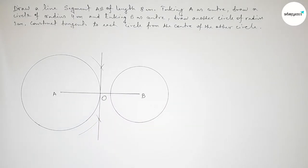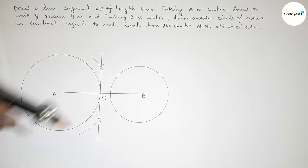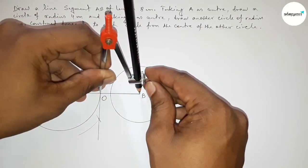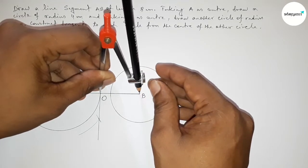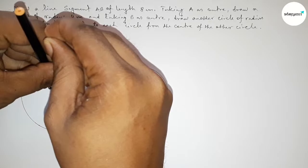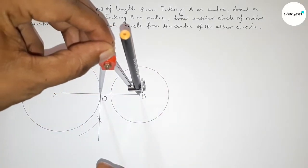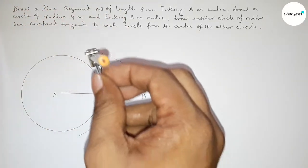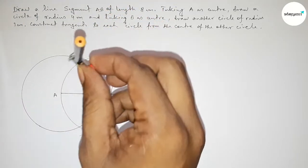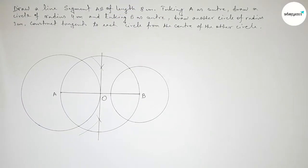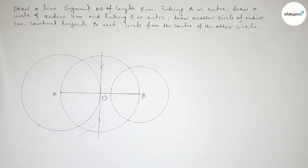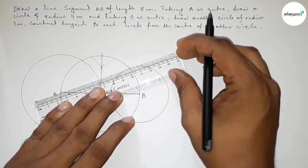Taking the midpoint as center O, and using the compass on point O and taking the distance OB equal to OA, we draw a circle passing through both points A and B. So taking center O and drawing this circle.